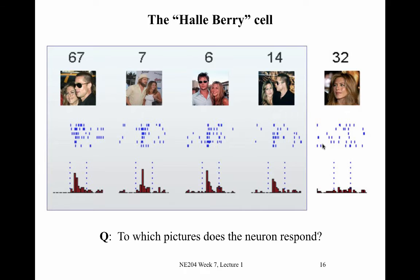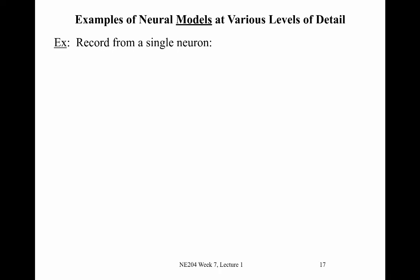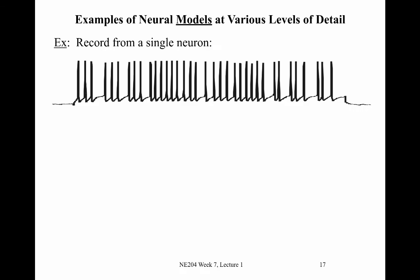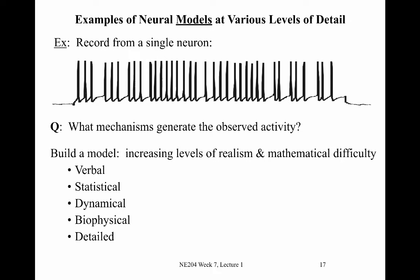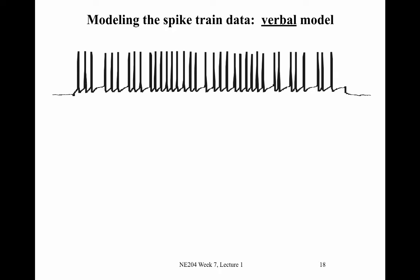In addition to data analysis methods, we considered examples of neural models at different levels of detail. Starting from voltage recordings of a single neuron with observable action potentials, we ask what mechanisms could generate this activity. We considered verbal models, statistical models, dynamical and biophysical models, and then very detailed biophysical models, moving sequentially through each type.